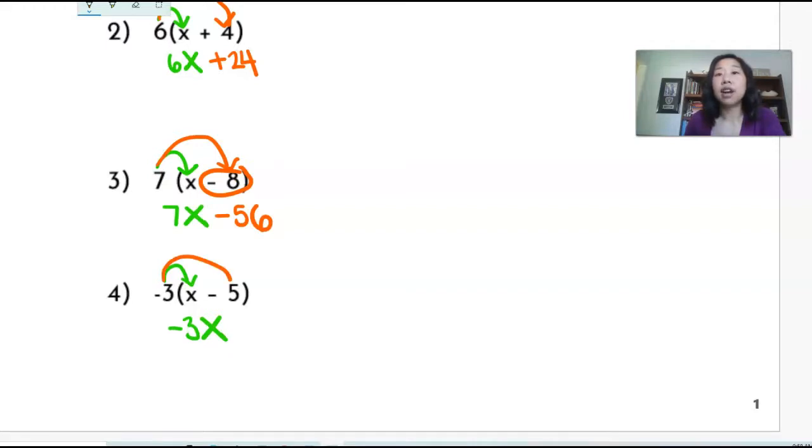And then I'm going to rainbow negative three. Remember the negative is attached to the five here. So I have negative three times negative five, which is going to be positive 15. Since I cannot simplify that any further, my answer is just going to be negative 3x plus 15.